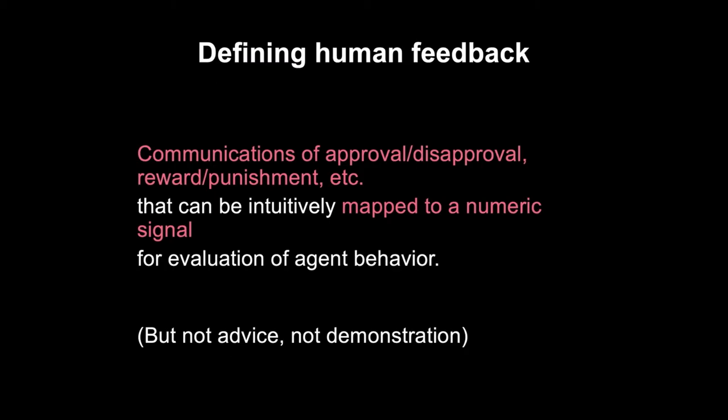Let me give a somewhat hand-wavy definition of human feedback. The hand-waviness is somewhat necessary because we are talking about something with a human element. What we mean is communications of approval, disapproval, reward, punishment — something in that sphere of positive and negative feedback signals that can be intuitively mapped to a numeric signal for the evaluation of agent behavior. I don't mean advice and I don't mean demonstration.